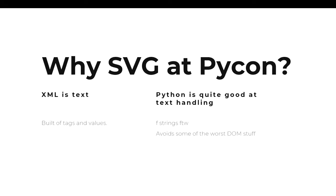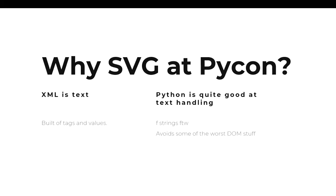A couple of months ago I decided to play around with SVG. But why SVG at PyCon? A lot of people said surely you should be talking about this with JavaScript. But XML is text, SVG is XML, and Python is quite good at text manipulation. Also I know Python and feel confident in the basic stuff, and F-strings are fantastic — they made my life heaps easy.